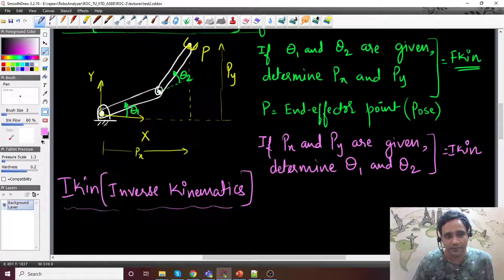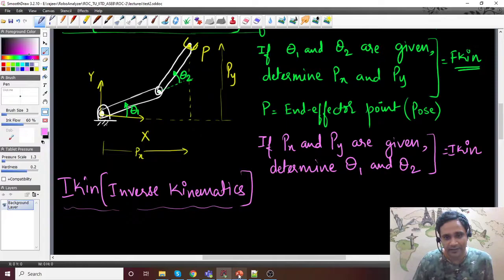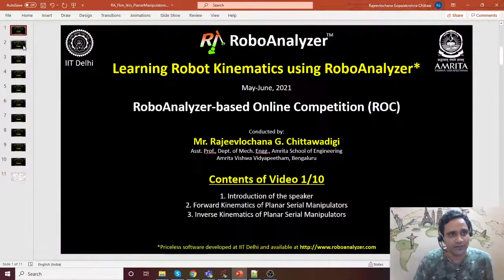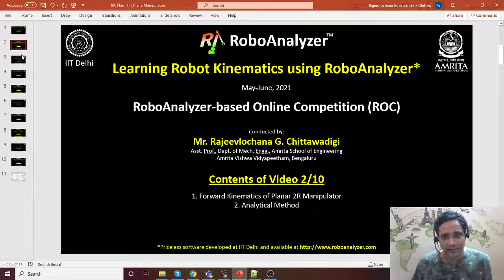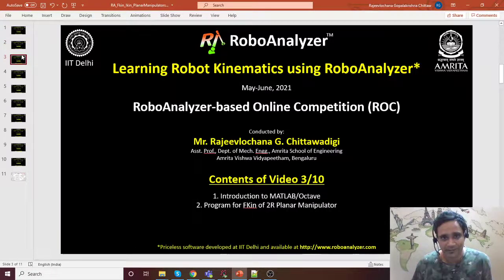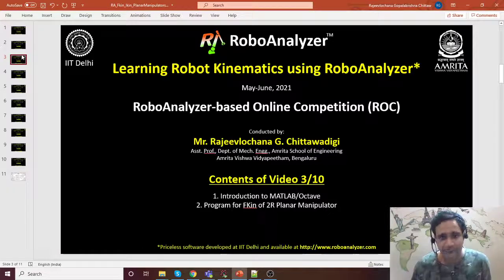So this is a very brief overview of what is FKIN and IKIN. In the remaining videos, let me very quickly go through. In video 1, we have covered inverse kinematics and forward kinematics introduction. In video 2, we will take up a 2R planar manipulator analytical method. In video 3, we will also introduce you to MATLAB and Octave, which is a free version or alternative of MATLAB, and then we will see how to write MATLAB program for forward kinematics of 2R planar manipulator.